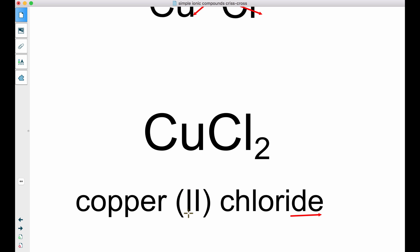We put parentheses or brackets and then the Roman numeral 2. So copper (II). And this simply tells us that it was the 2+ copper that we used.